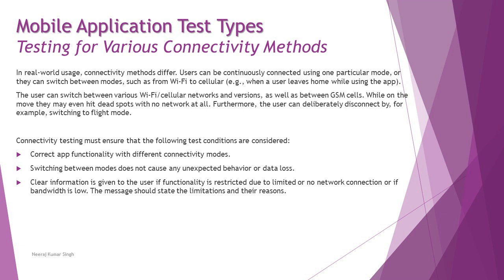Continuing with testing for various connectivity methods — connectivity types are covered, now we discuss the methods used to conduct testing. In real-world usage, connectivity methods differ. Users can be continuously connected on one mode or switch between modes such as Wi-Fi to cellular. For example, you may be at home on Wi-Fi and suddenly move out for urgent work, switching to cellular. When the user leaves while using the app, the network switches, and the app should adapt to the new internet connectivity and immediately reconnect and continue from where you were.